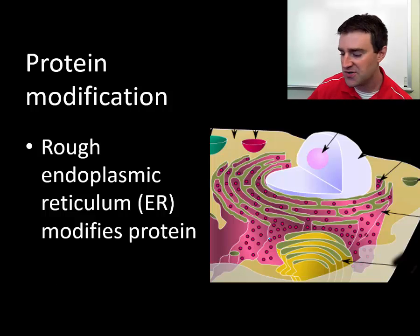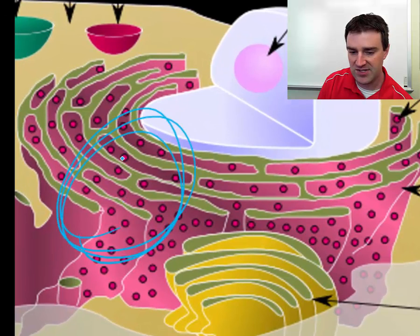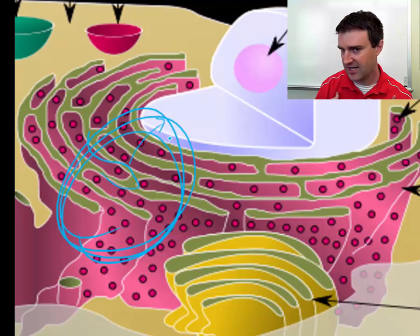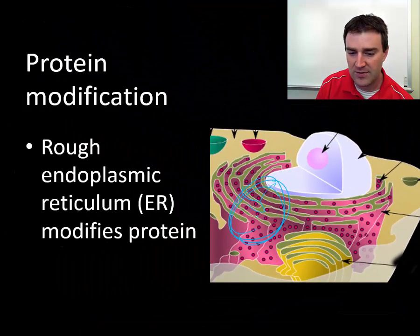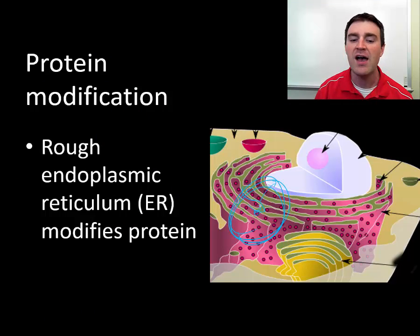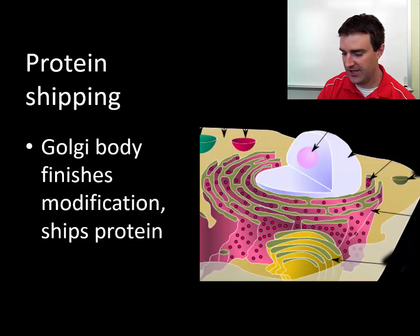One of those structures is the rough endoplasmic reticulum, which is a series of folded membranes very close to the nucleus because it modifies the protein next. Once the ribosome builds the protein, it deposits the protein right into that network of folds, where the protein might get modified in some way — maybe amino acids get cut off, or maybe amino acids get added.